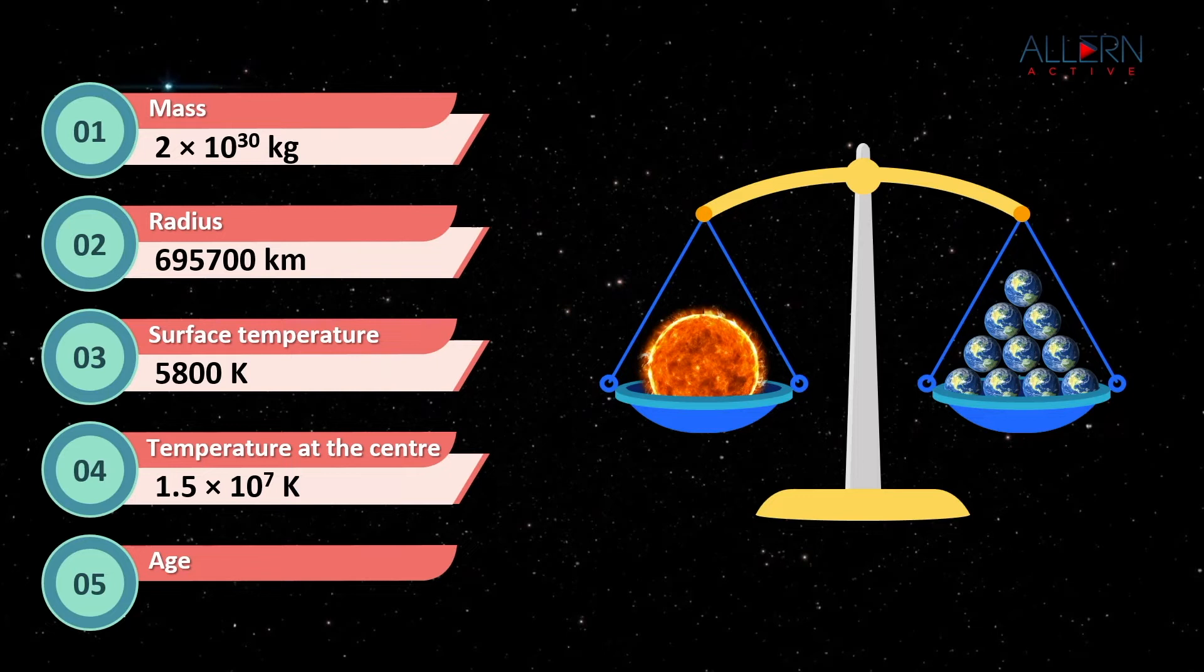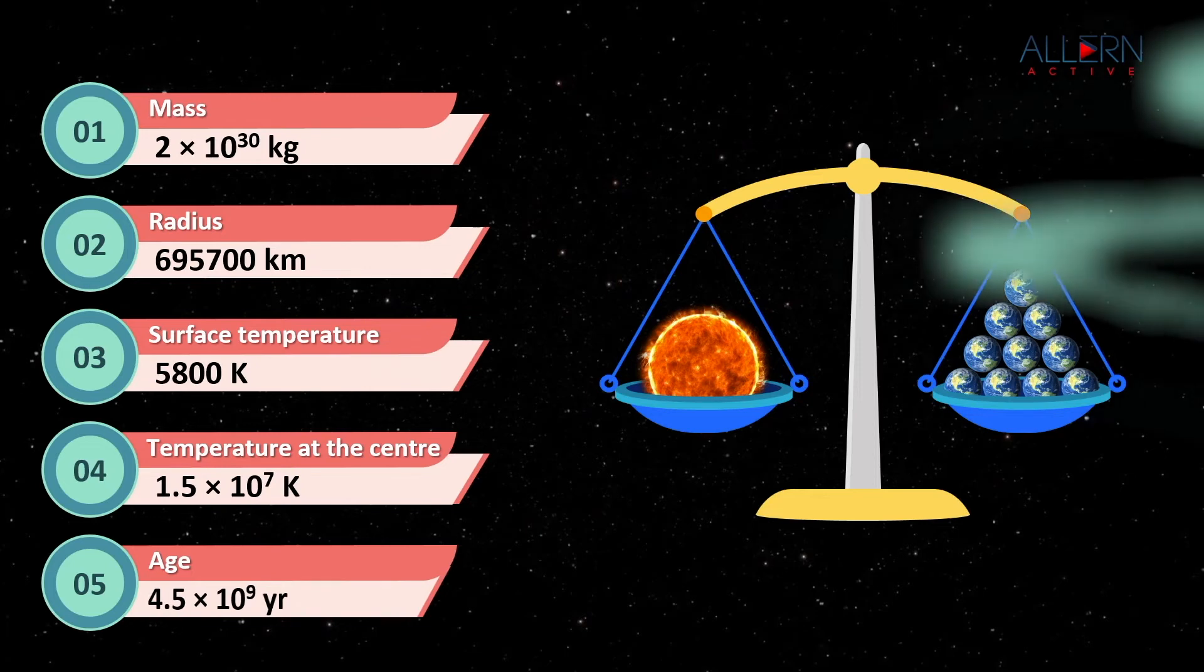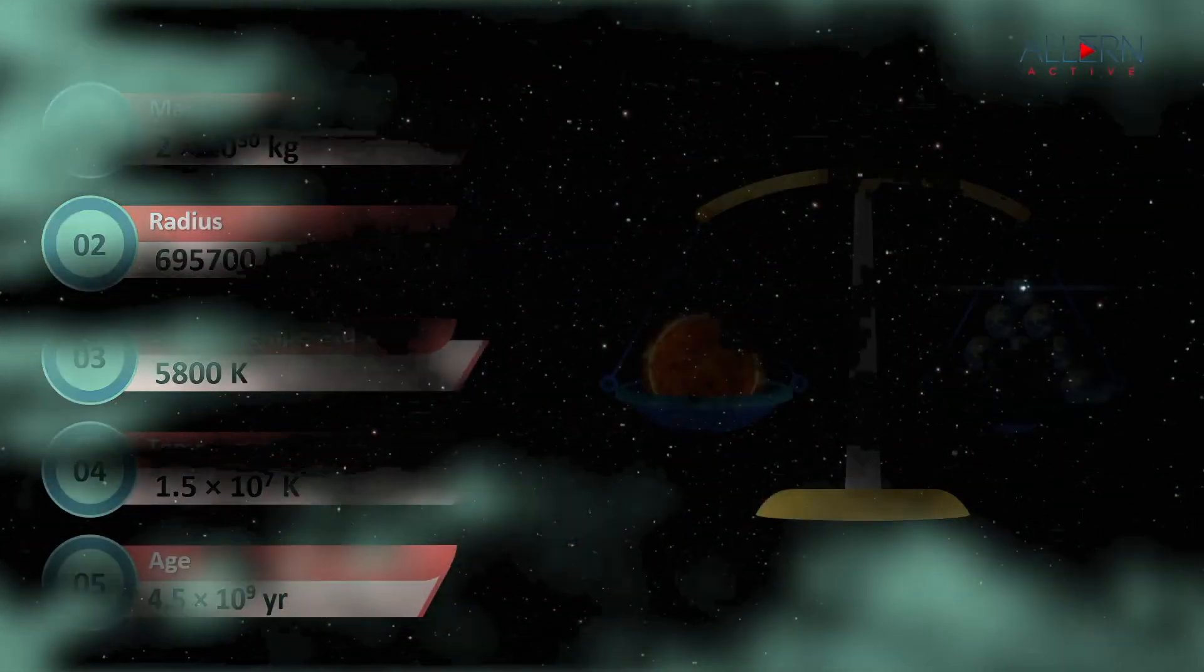Detailed studies of the properties of the Earth have led scientists to conclude that the properties of the Sun have remained unchanged over its lifetime, i.e. the past 4.5 billion years. According to the studies made by astronomers, these properties will change further after 4.5 billion years.